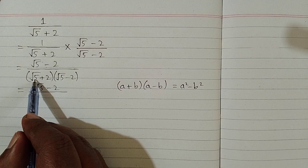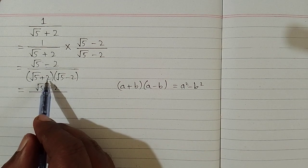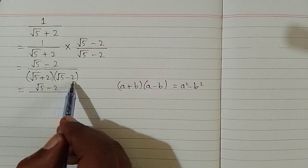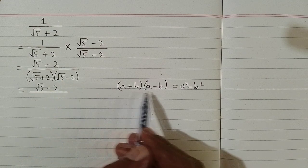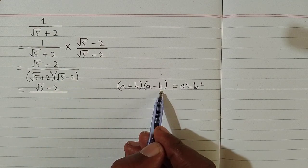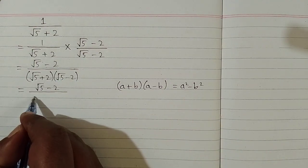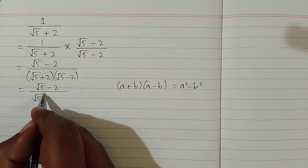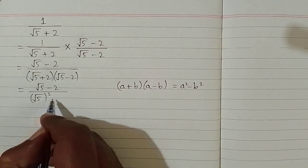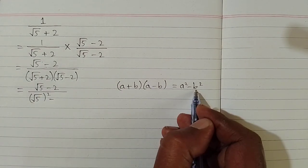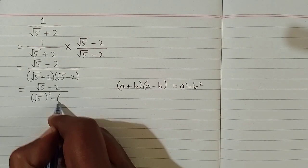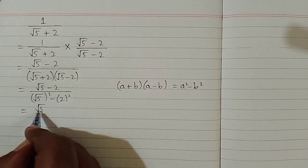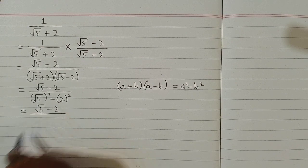We can see that we have square root of 5 in place of a and 2 in place of b. Similarly in this factor we have square root of 5 in place of a and 2 in place of b, so we can apply this formula. We will write square root of 5 squared minus b squared, and here b is 2 so we will write square of 2. Now we have square root of 5 minus 2 upon this expression.